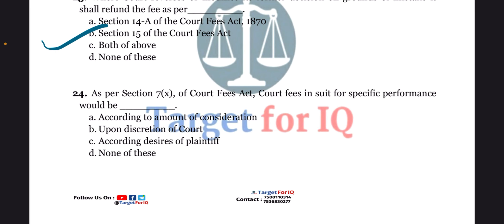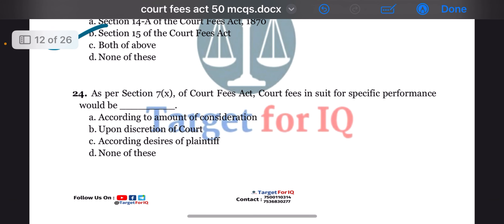Next question: as per section 7, clause 10 of this act, court fees in suit for specific performance would be dash. The options are A. According to amount of consideration, B. Upon discretion of court, C. According to desires of plaintiff, or D. None of these. The correct answer is option A. According to amount of consideration.